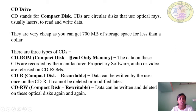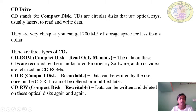There are three types of CDs. First, CD-ROM (Compact Disk Read-Only Memory): the data is recorded by the manufacturer and can only be used for reading. Second, CD-R (Compact Disk Recordable): data can be written by the user once, but it cannot be deleted or modified after writing.